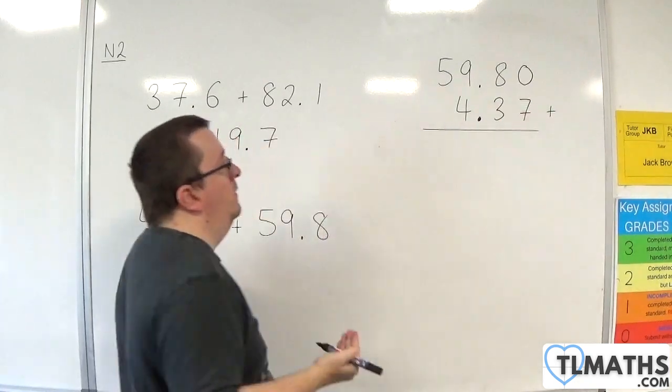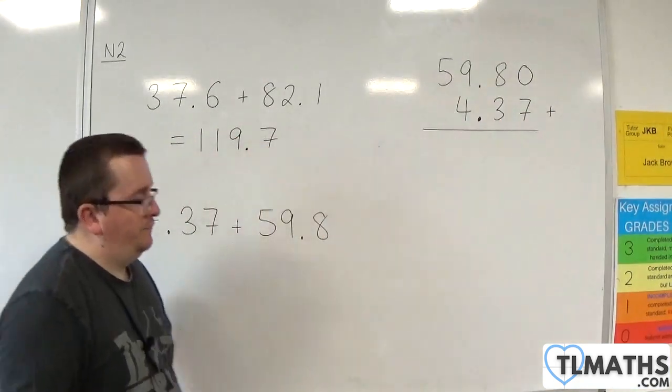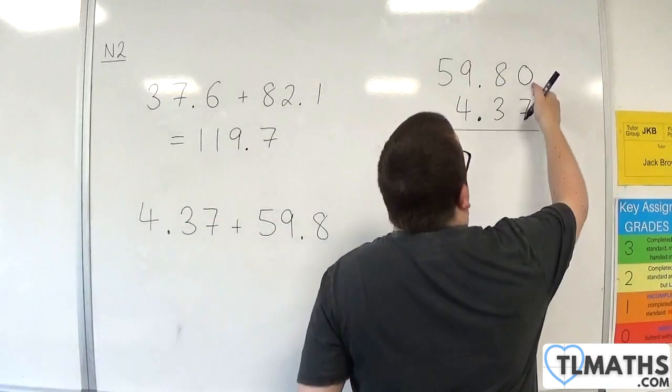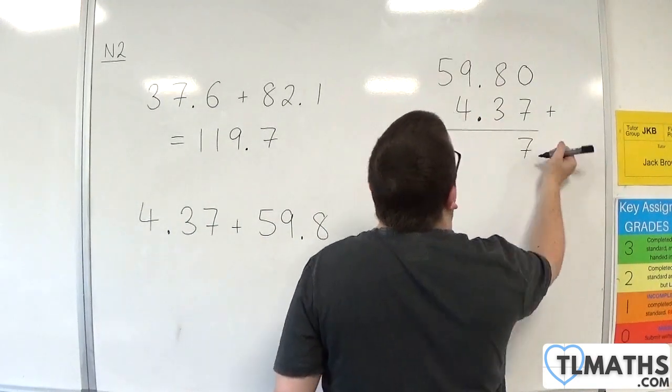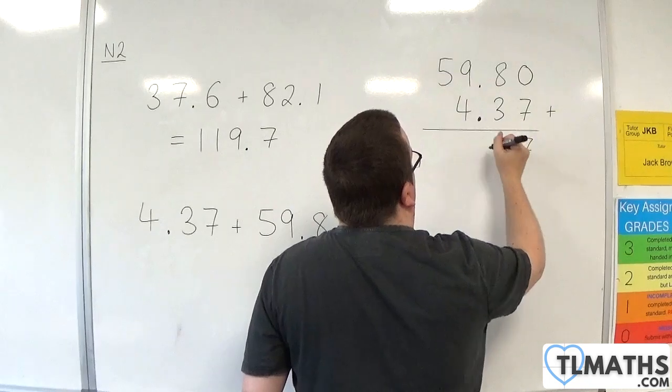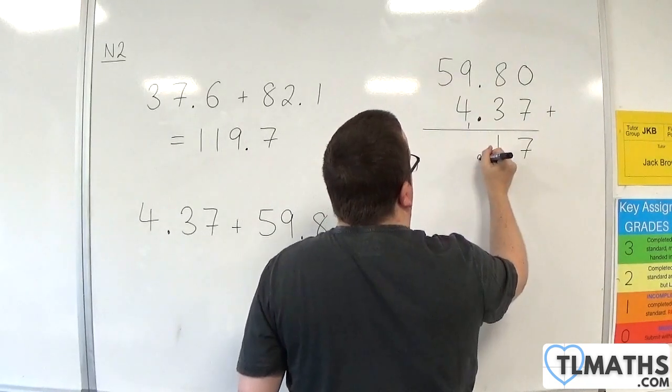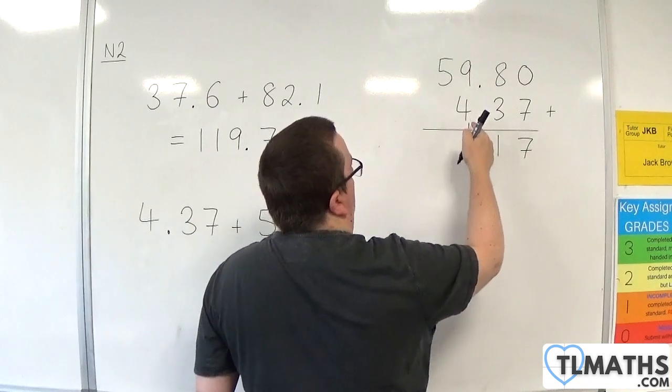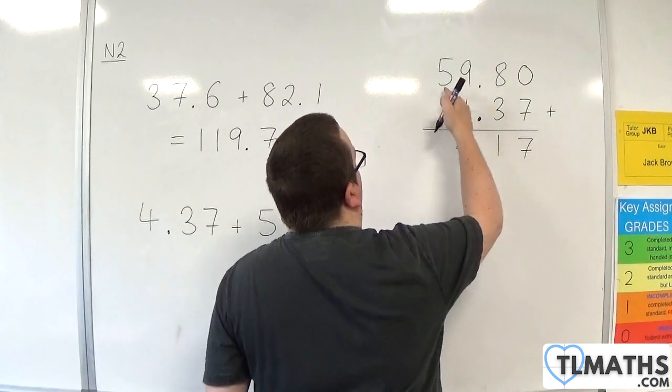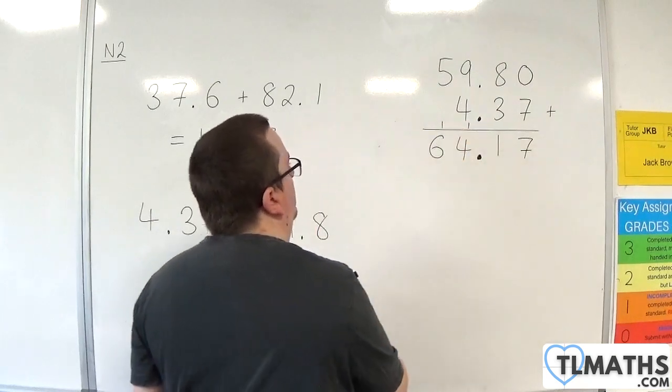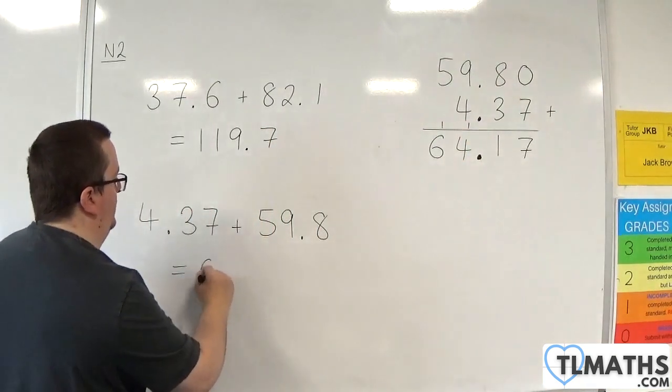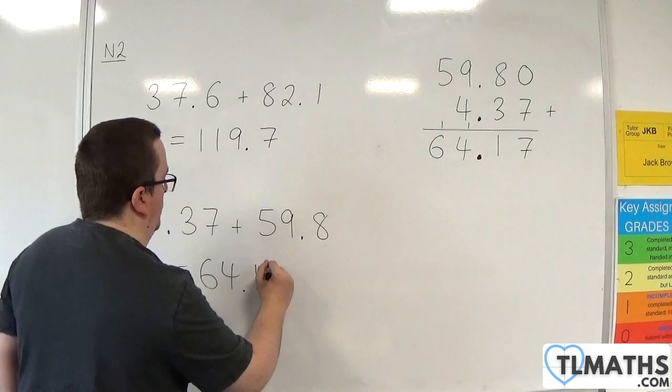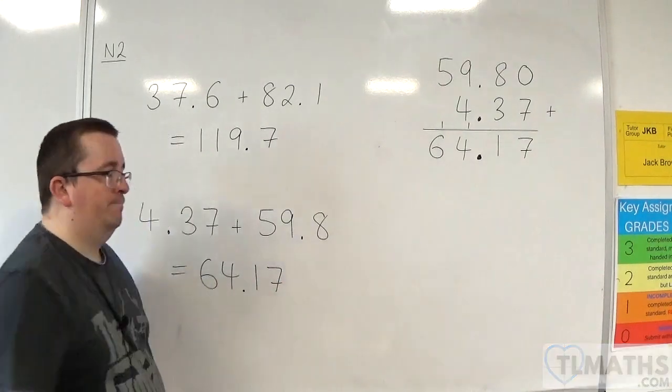And now I'm ready to solve, to add them together. So 0 plus 7 is 7. 8 plus 3 is 11, so 1, carry the 1. Bring the decimal point down. 9 plus 4 is 13, plus the 1 is 14, so 4, carry the 1. 5 plus 1 is 6. So we have 64.17.